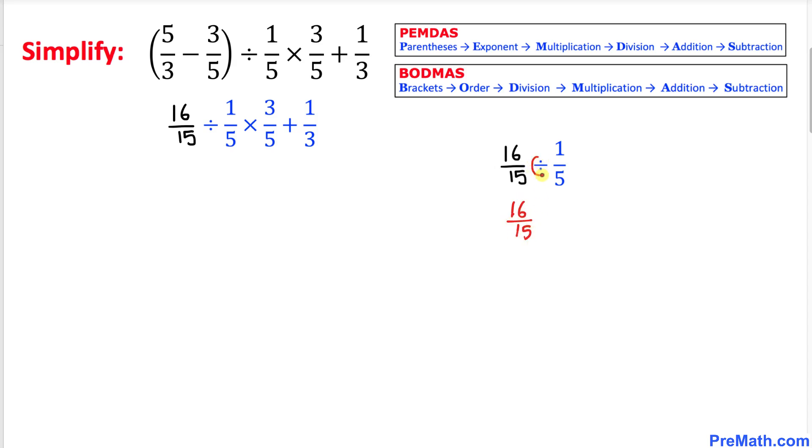16 divided by 15, and I'm going to convert this division sign into multiplication and flip this one over. So this is going to be 5 over 1. Here, 5 and 15 reduce to 3, so we got 16 divided by 3.